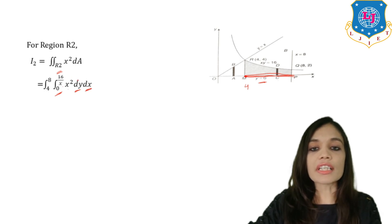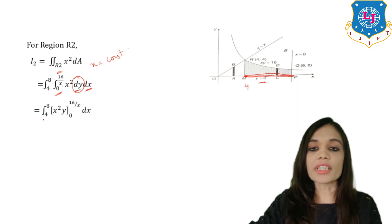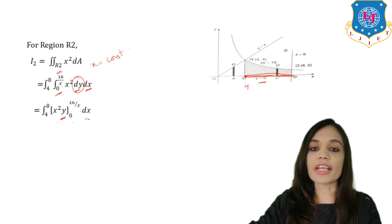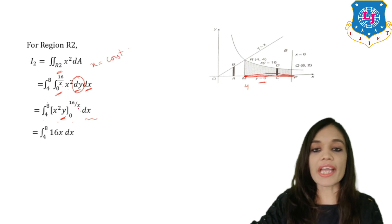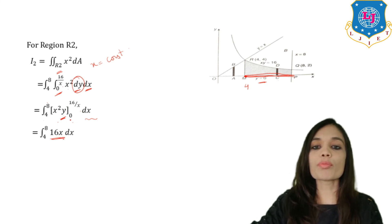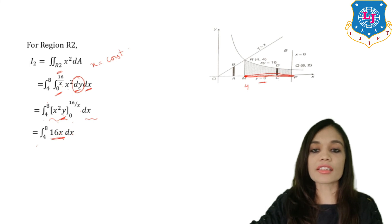Integrating with respect to y keeping x constant: x² stays as is, integration of 1 dy gives y, evaluated from 0 to 16/x. Putting 16/x in place of y leaves 16x. Putting 0, the term goes to 0. So what remains is the integral from 4 to 8 of 16x dx.